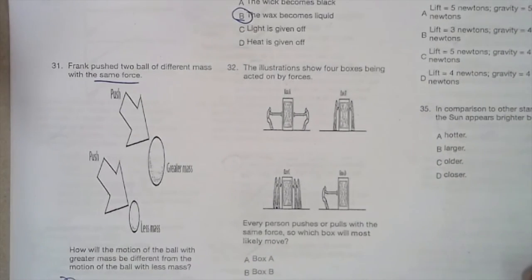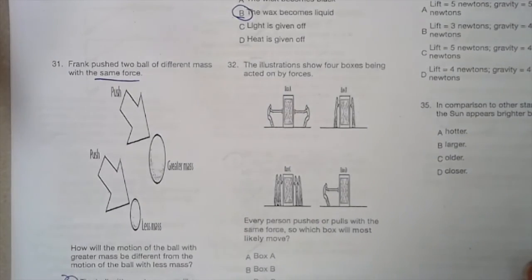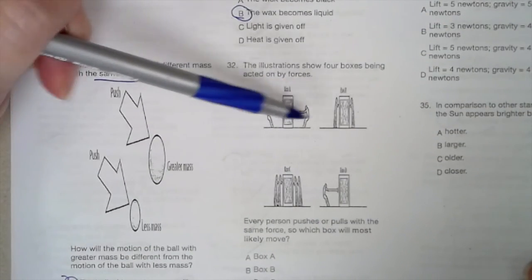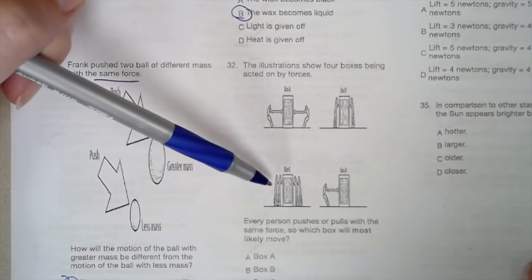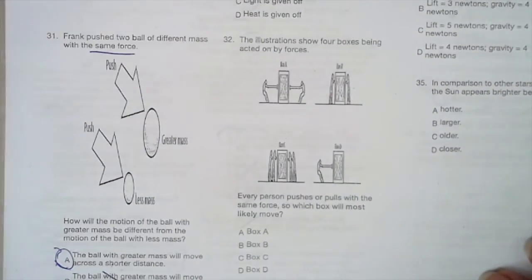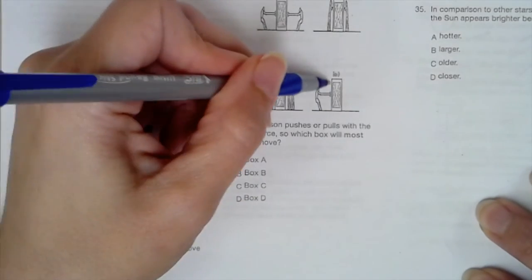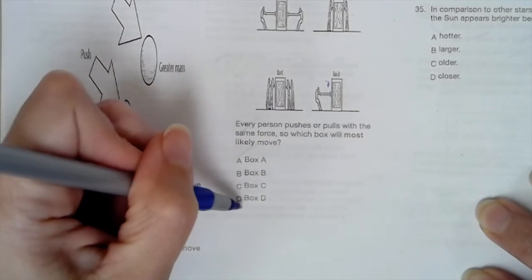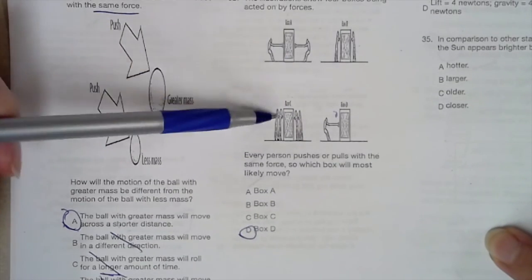The illustrations show four boxes being acted on by forces. So we have these two guys pulling it, it looks like. These two guys pushing it. Then we have two guys on this side and two guys on this side. Then we just got one guy on this side. Every person pushes or pulls with the same force, so which box is most likely to move? This box, which is box D, is most likely to move. All of these guys are pulling and pushing with the same force, so their box isn't going to move at all.